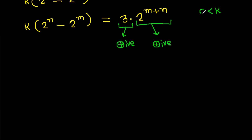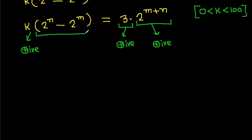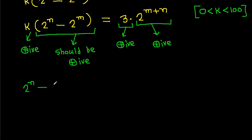Now, 3 is positive, 2^(m+n) is positive, and k is greater than 0 and less than 100, so k is positive. That means 2^n minus 2^m must be positive, which means n must be greater than m.